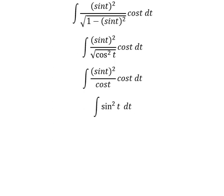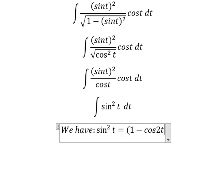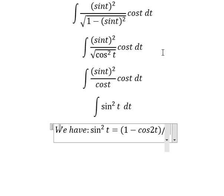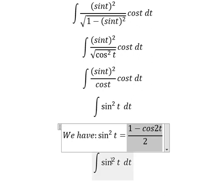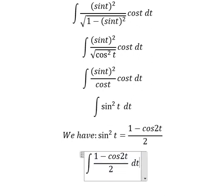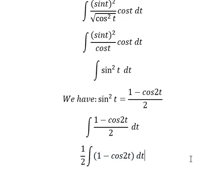Next we apply the trigonometric formula here. We need to transform sin²(T) using the half-angle identity. I will factor the number two outside.